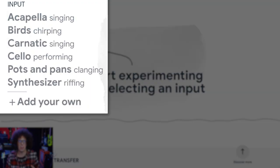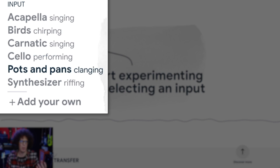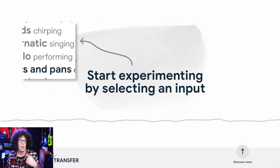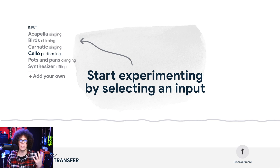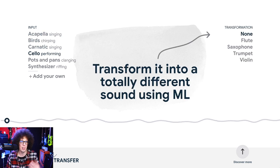On the left we've got our inputs. There are some stock inputs like a cappella, birds, kinetic, cello, pots and pans, synthesizer, or the fun part — add your own. But let's have a listen to what they've got. I'm going to click cello.